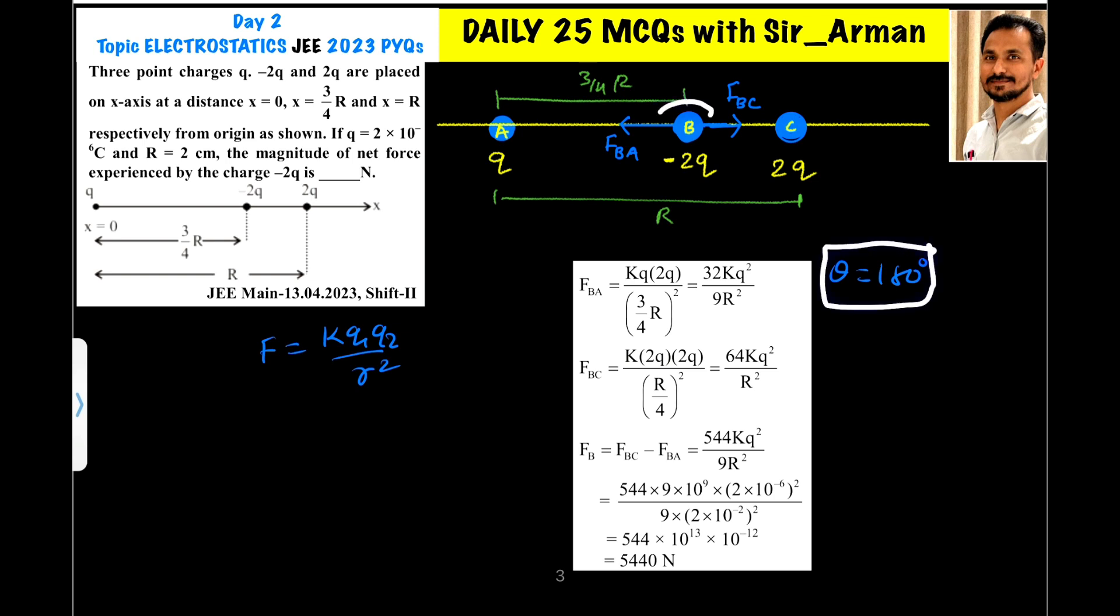As these two forces are in opposite direction, the angle is 180°, we can directly subtract them. So force on B = force on B by C - force on B by A. So here, force on B by C is 64kq²/r², and force on B by A is 32/9 kq²/r².